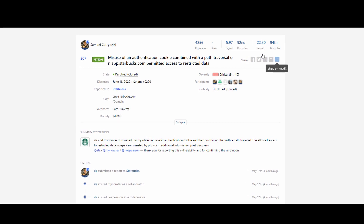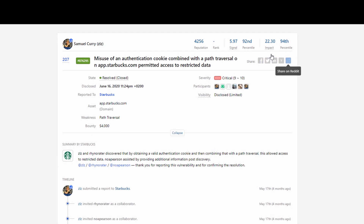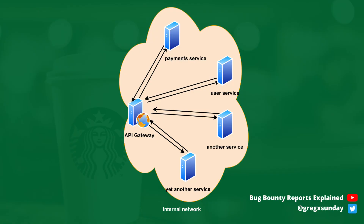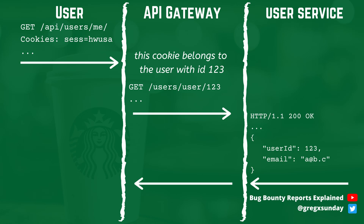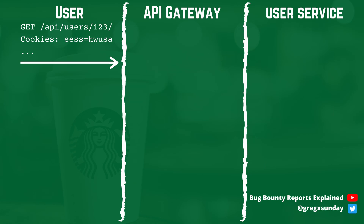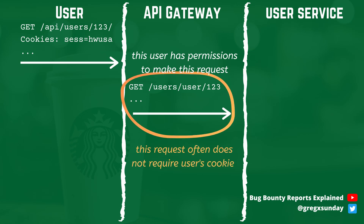What's important in this path traversal vulnerability is that it does not affect any file read or file upload functionality. To understand it, let's see how modern web applications work. A very trendy solution nowadays is using microservices — an architecture where there is an API gateway which talks with the user, and in the internal network there are multiple services which talk with the API gateway and are not reachable from the internet. What's important from the security point of view is that authentication and authorization may happen on the API gateway level, which means the API gateway decides whether the user has permissions to perform a specific action and whether to forward a specific request to the service. The service does not really validate any permissions.